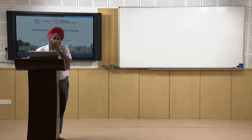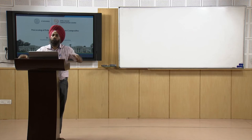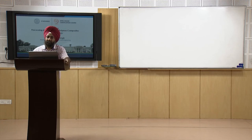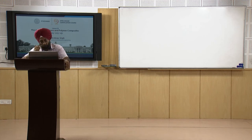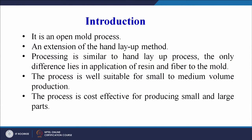In spray layup, the mold will also be open — not closed from all sides, only from bottom and top, with the sides open. We spray the material constituents onto the shape and the product is ready. The spray layup process is an open mold process and an extension of the hand layup method, with the basic phenomenon being the same: combining the two constituents — matrix and reinforcement.